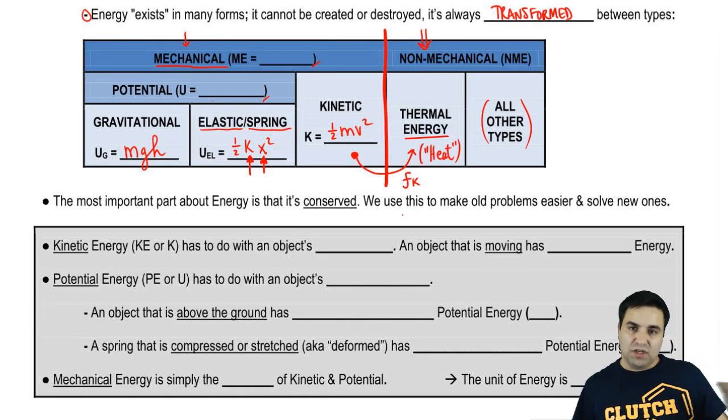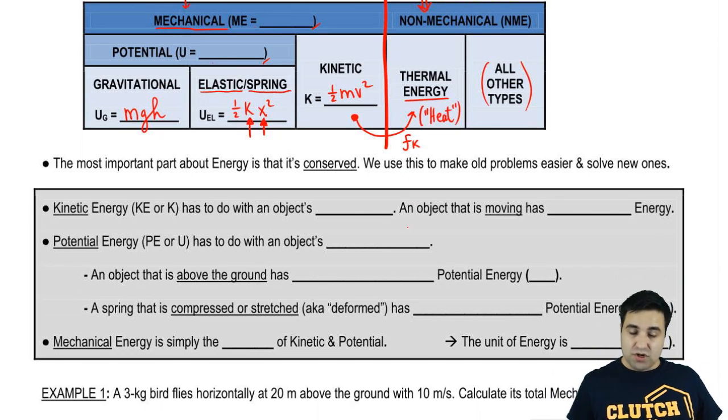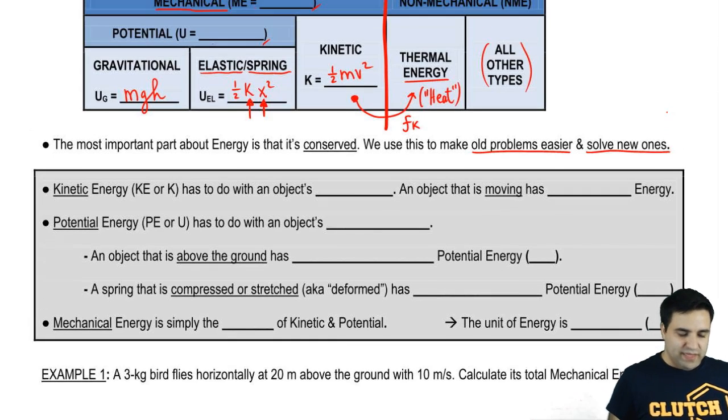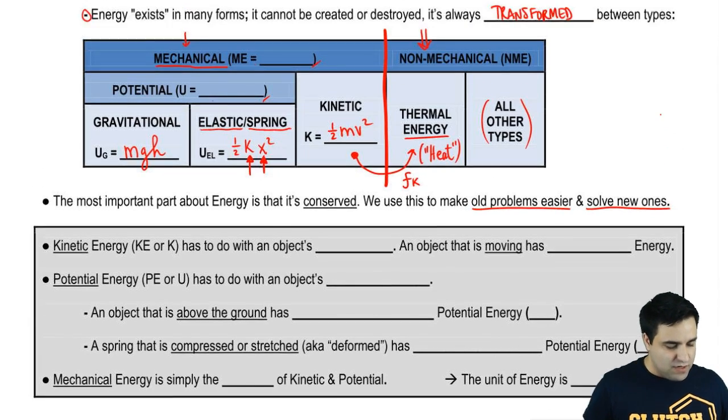Let's keep going. So I mentioned we don't know much about exactly what energy is, but we know how it works. And we know that it's conserved. And that's the most important part about energy. That's why it's such a big deal. It's because it's this physical quantity that is always conserved. So we're going to use this idea to make old problems easier, as well as to solve new ones.